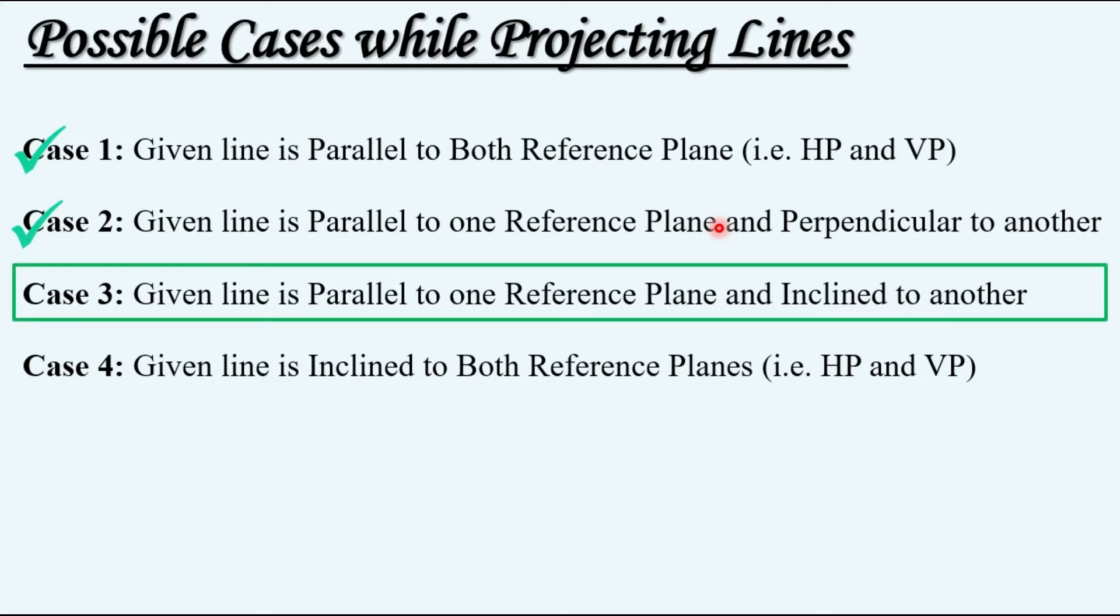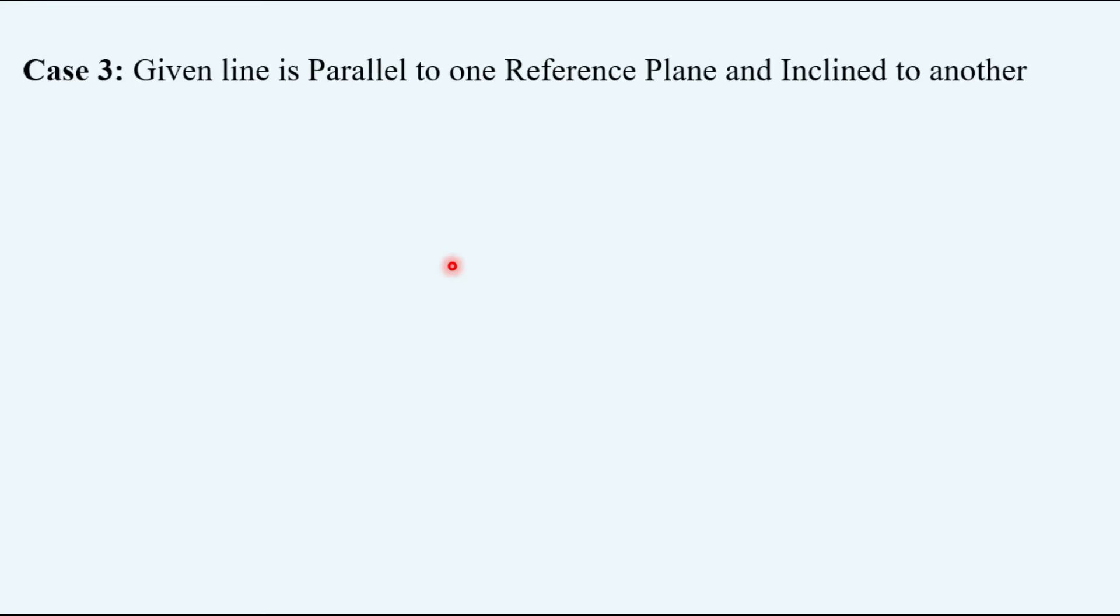Today we will look at Case 3, that is when the given line is parallel to one reference plane and inclined to another. Coming to Case 3, when the given line is parallel to one reference plane and inclined to another, similar to Case 2, it also has two sub-cases.